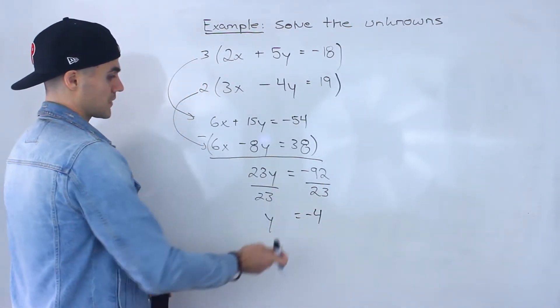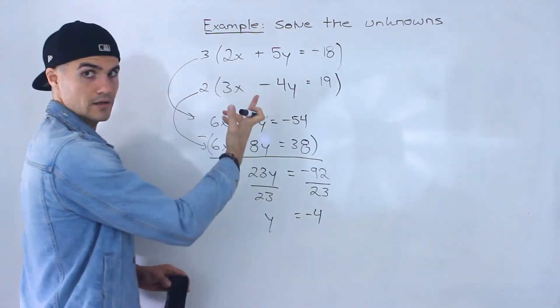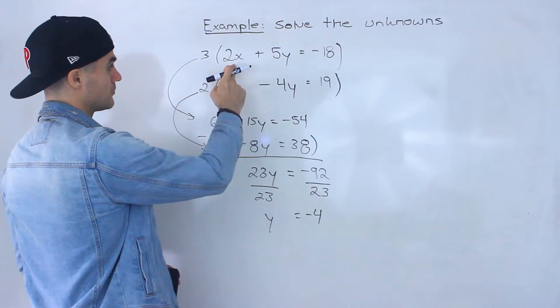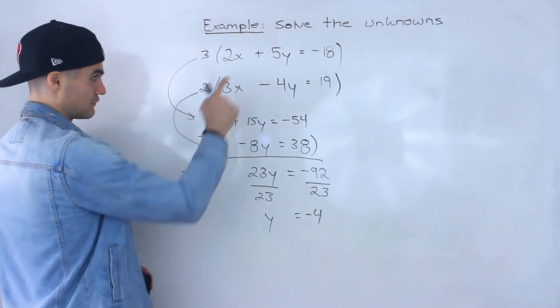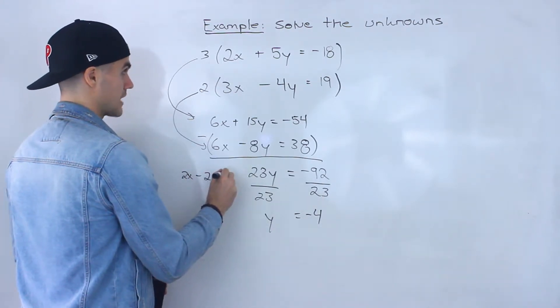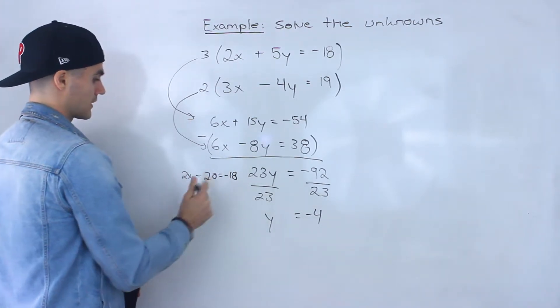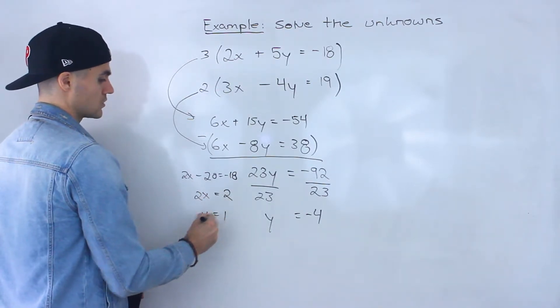And then what we can do is we can plug in this y value of negative 4 into either this equation or this one that we were given and solve for x. So if I plug it in here I'll end up having 2x, 5 times negative 4 gives us minus 20 equals negative 18. I bring the negative 20 over so I'll have 2x equals 2 so x would be 1.